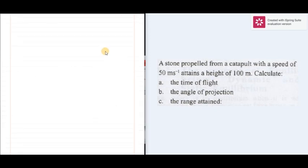To find the time of flight, we have to use the angle. We have calculated the angle of projection is 63 degrees. The time of flight is expressed as 2u sin theta all over g.